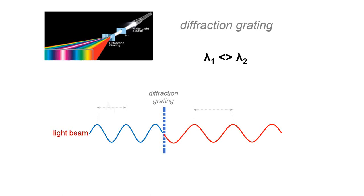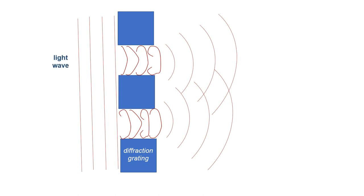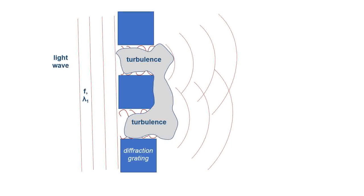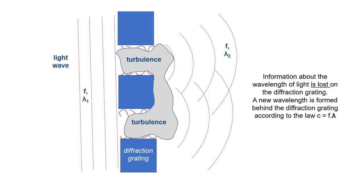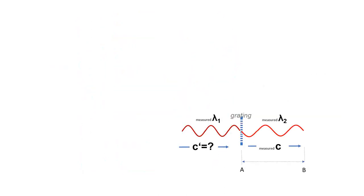As a result, the speed of light changes on the diffraction grating. Light from a moving light source arrives at a speed that is not equal to the constant C. After the passage of light through the diffraction grating, the speed of light is restored, as determined by the constant C. A change in the wavelength of light on a diffraction grating is due to the change in the speed of light. After passage through the diffraction grating, its speed equals the constant C regardless of the speed of the light source.